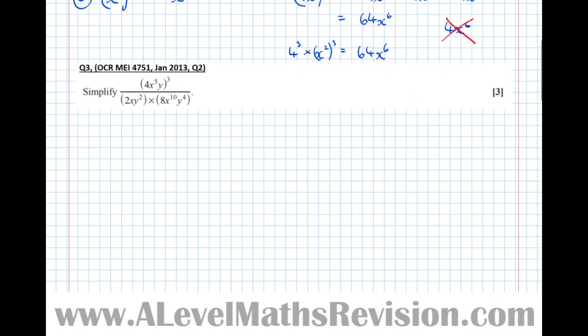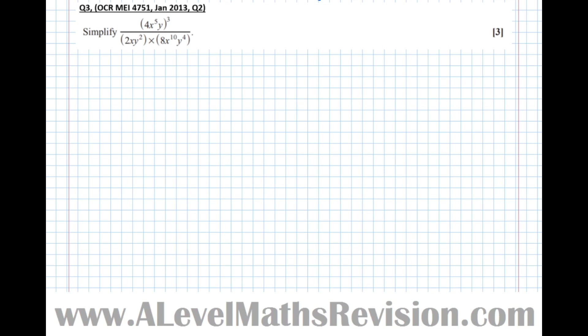This next question brings all three rules together — simplify the expression. I recommend doing individual parts separately. Concentrate on the numerator first: (4x⁵y³)³. Everything in that bracket needs to be cubed: 4³ times (x⁵)³. Using rule 3, x⁵ cubed gives x to the power of 15. So the numerator becomes 64x¹⁵y³.